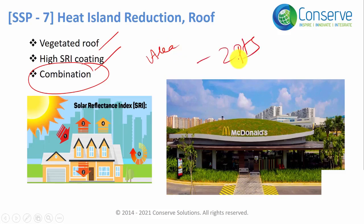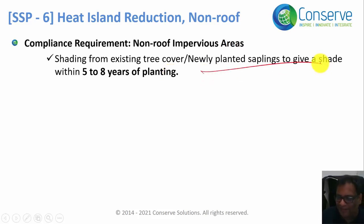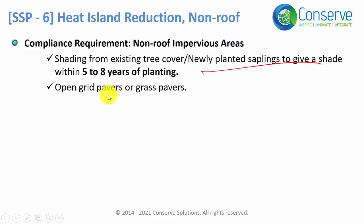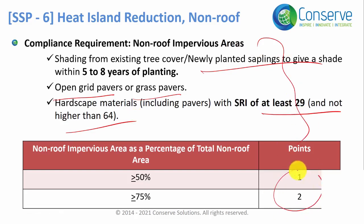For non-roof surfaces such as parking, roadways, and walkways, projects can incorporate multiple strategies: shading hardscape surfaces with existing or new trees — new trees must be able to provide shade within 5 to 8 years of planting and must already be planted at the time of occupancy — or using open grid pavements or grass pavers, or using high SRI coating with an SRI between 29 and 64. Points are awarded based on the area of non-roof surfaces where these strategies are incorporated.